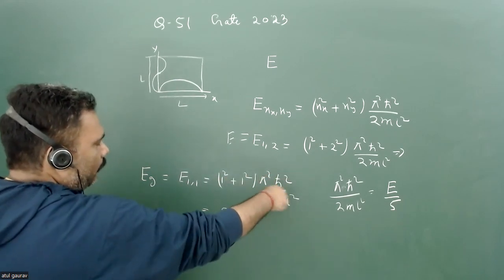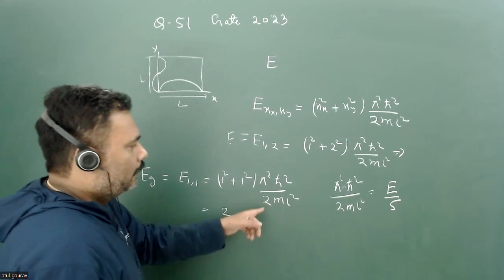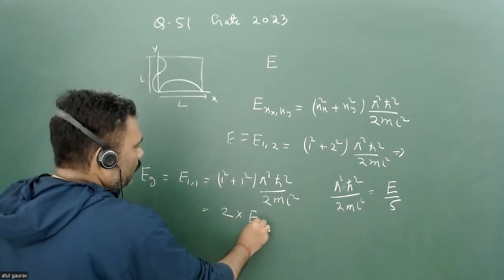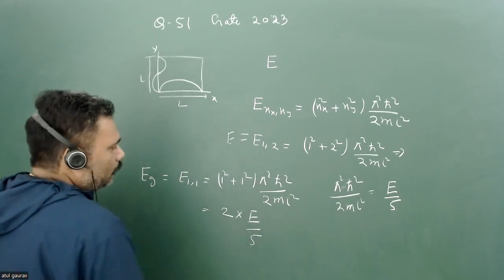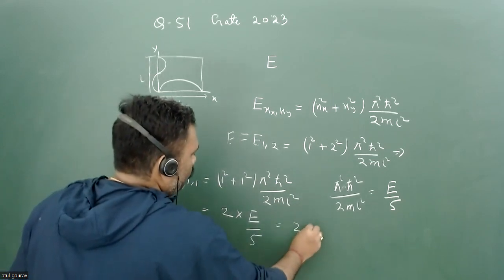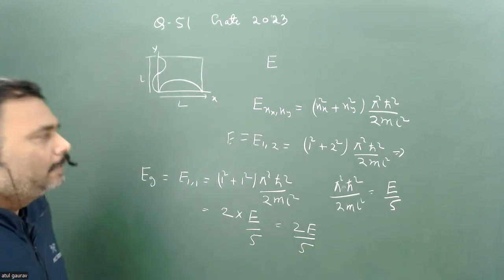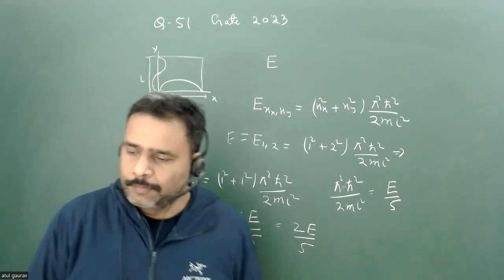We have already calculated this particular number, so pi square h-bar square upon 2mL square is given by E by 5. So the answer is 2E by 5. So this is a very nice problem, very conceptual problem. There is not much calculation.